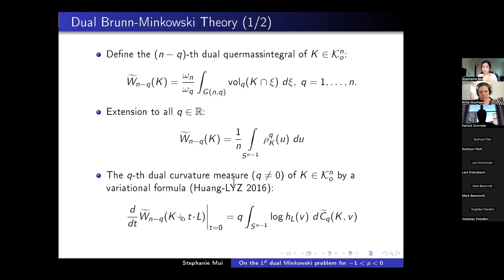Now let's talk about another variant of Minkowski theory known as dual Brunn-Minkowski theory. Regular Brunn-Minkowski theory is useful for answering questions about projections of convex bodies, while dual Brunn-Minkowski theory is more useful for answering questions about intersections. An important measure in dual theory is the M minus Q-th dual quermassintegral of a convex body, which is a generalization of the volume.